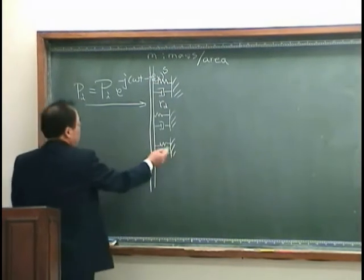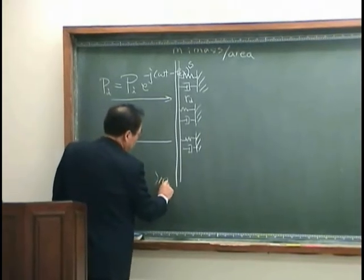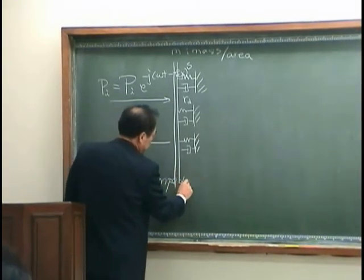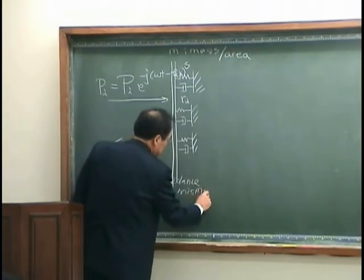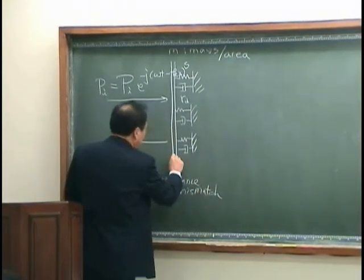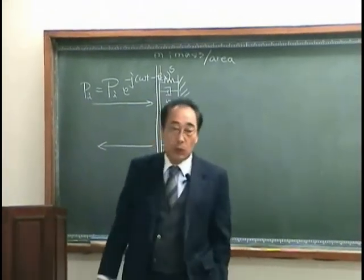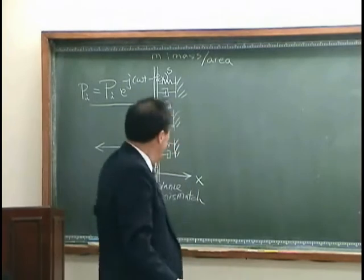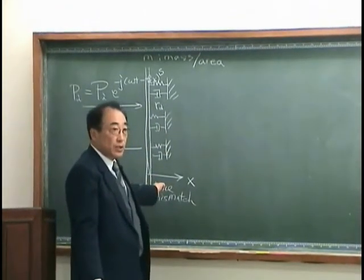And then due to the impedance mismatch, impedance mismatch at x equal 0, meaning that I am using the coordinate starting at this flat surface of discontinuity.